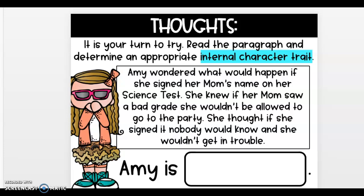This next example is also internal — Amy's thoughts. 'Amy wondered what would happen if she signed her mom's name on her science test. She knew if her mom saw a bad grade, she wouldn't be allowed to go to the party. She thought if she signed it, nobody would know and she wouldn't get in trouble.' Amy is trying to be sneaky because she thinks nobody will find out. She's also being very dishonest — you do not sign your parent's name or lie to your teacher. So Amy is dishonest and sneaky — two internal character trait words.